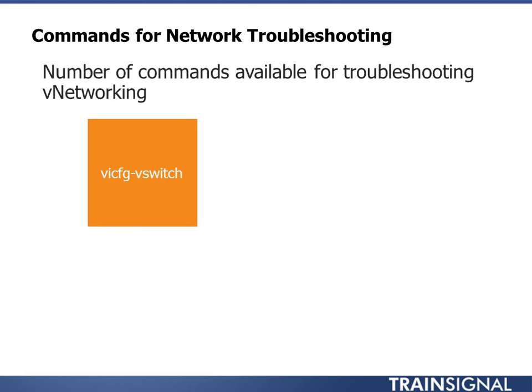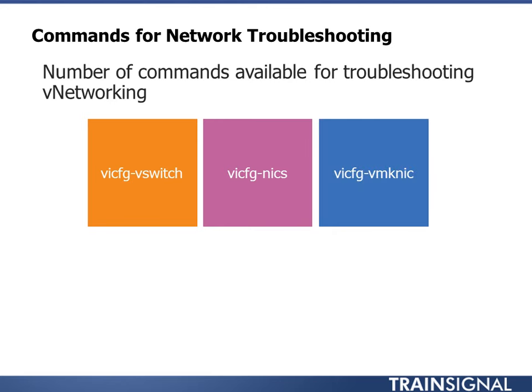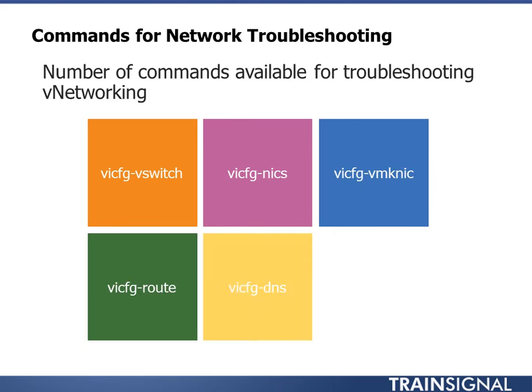There are a number of commands — a couple of older commands like the vi-config commands that we don't really see on the hosts anymore, but can still be used with the VMA. So that's vi-config vswitch, nix, vmk-nix, route, and dns. They basically do what you think they would do: vswitch is your vswitch configuration, nix lists your physical NICs, vmk-nix is for creating and managing VM kernels, route displays your routing table, and dns is your DNS configuration.